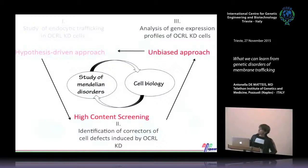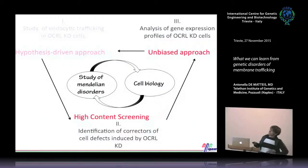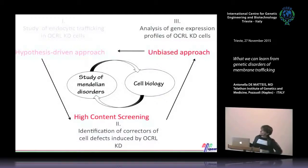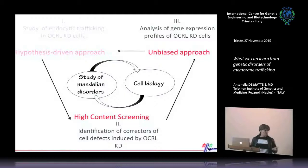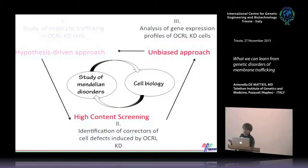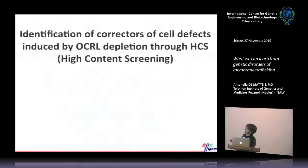We are now studying in more depth the mechanism through which excess filamentous actin on endosomes impairs trafficking. But at that time, we thought we knew enough to exploit this phenotype to develop an assay for high-content screening looking for correctors of this condition. The first and crucial step in setting up this pipeline is to identify a robust cell phenotype to use in the primary assay for screening libraries of siRNAs, small molecules, or whatever.